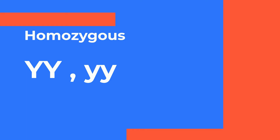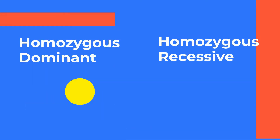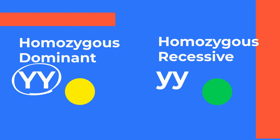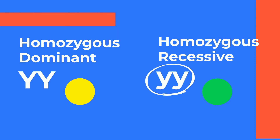For example, with pea plants, seeds can be yellow or green color. Yellow color is dominant to green. So a pea plant that has two copies of the allele for seed color is homozygous for seed color. The dominant trait is always written with a capital letter and the recessive trait is written with a lowercase letter. Capital Y, capital Y (YY) is homozygous dominant, and lowercase y, lowercase y (yy) is homozygous recessive.